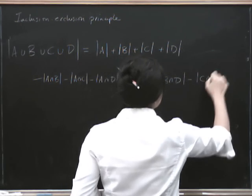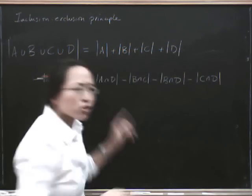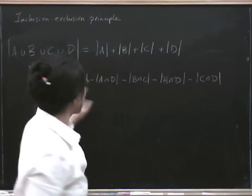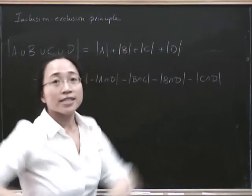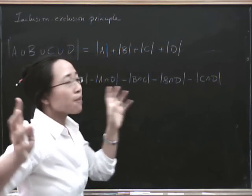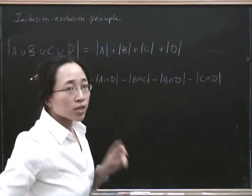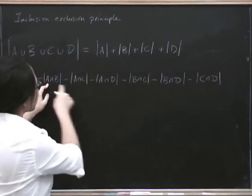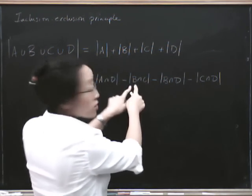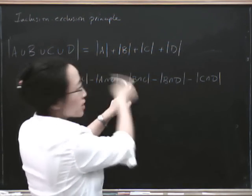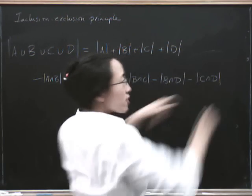Note how I tried to do that in a systematic way. I didn't just randomly start writing down intersections of two sets, I did it in a systematic way to make sure I got them all. I started with A intersection everything, then I moved on to B intersection everything. I didn't have to do B intersection A because I'd already done it, then I did C intersection everything.